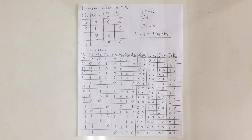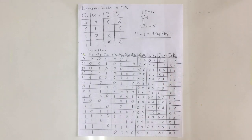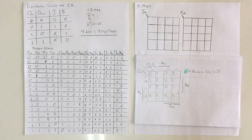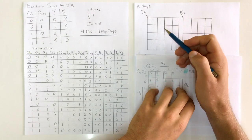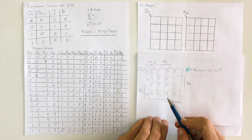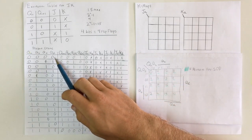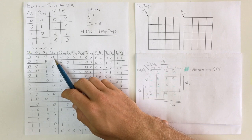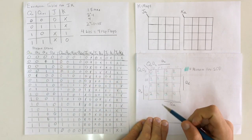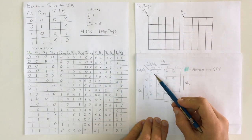Now that we have our table completed, we move on to determining the minimum sum of products for all of our J and K inputs for each flip-flop A, B, C, and D. We can do this using Karnaugh maps. Here we have a key for how to fill in a K-map of a 4-bit configuration — states 0 through 15, similarly to how we have all possible permutations of 4 bits as our possible states.